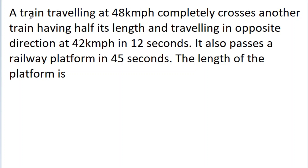In this video, we have given a train traveling at 48 km per hour that completely crosses another train having half its length and traveling in the opposite direction at 42 km per hour in 20 seconds. It also passes a railway platform in 45 seconds. We have to find the length of the platform.